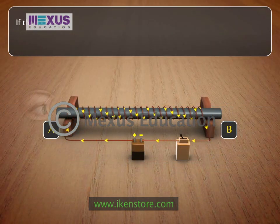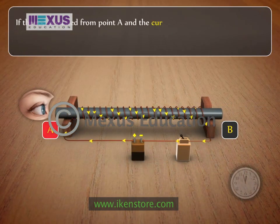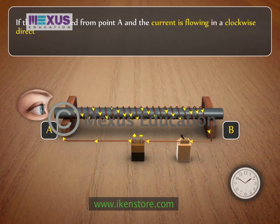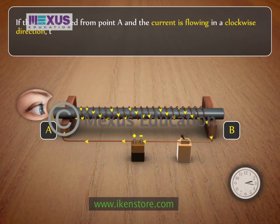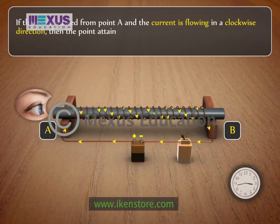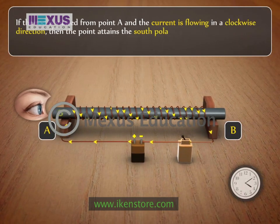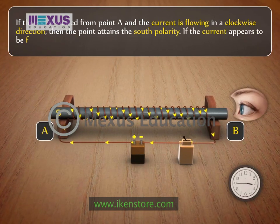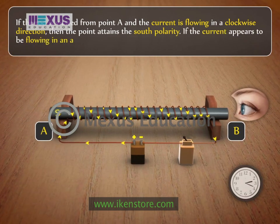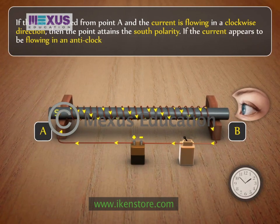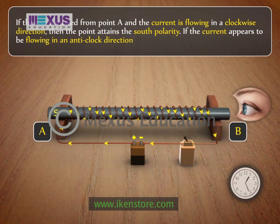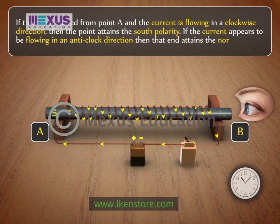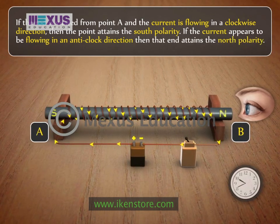The polarity of the rod depends on the direction of the current. If the rod is viewed from point A and the current is flowing in a clockwise direction, then that end attains south polarity. If the current appears to be flowing in an anti-clockwise direction, then that end attains north polarity.